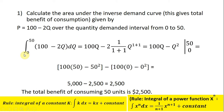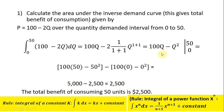We've got the definite integral from 0 to 50 of 100 minus 2Q dQ. The first thing we need to do is take the integral of 100 minus 2Q — the anti-derivative. We get 100Q for the 100 term, and then the minus 2Q term, remembering that Q is raised to the power of 1, simplifies following the power rule, leading to 100Q minus Q squared.